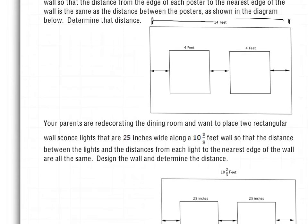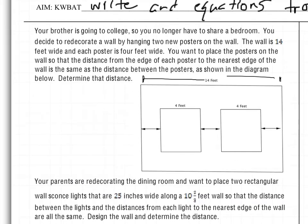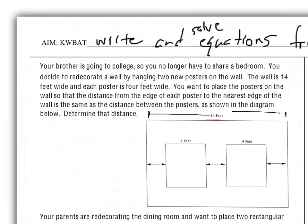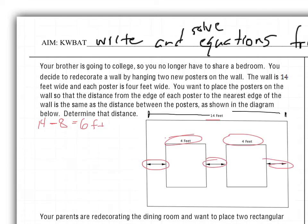Go ahead and see if you can find the answer. So as you went through this, the question is, did you write an equation? Many of you probably didn't have to — you would have looked at this and said, well, I have these 14 feet, and if I take away the 4 feet of the poster and the 4 feet of the poster, so I take away 8, that's going to leave me with 6 feet of extra space. So this extra 6 feet is going to be split into these 3 pieces. 6 divided by 3 gives me 2 feet.